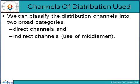Distribution channels can be classified into two broad categories: direct channels and indirect channels. Direct channels are when producers directly sell their goods to consumers with no middlemen involved. Producers establish direct links with consumers through traveling salesmen and through their own retail shops and showrooms.